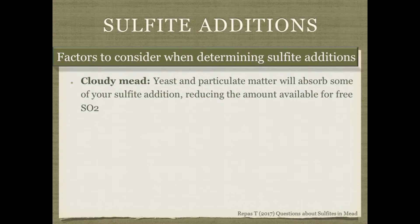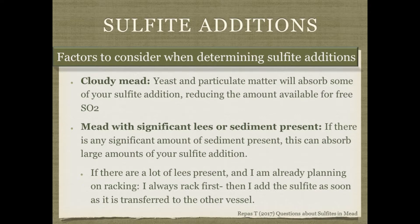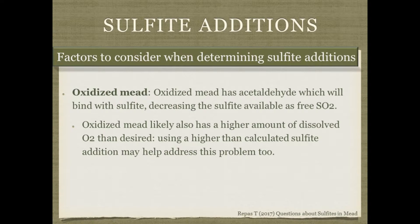If mead is cloudy with yeast or fruit particles, these can absorb some or a lot of your sulfite addition. If there are lees or sediment present, they can absorb a huge amount. My practice is to rack first and then add sulfite immediately after transfer to minimize absorption. If the mead is already slightly oxidized or has acetaldehyde, those will also bind to the sulfite and decrease available levels, requiring a higher-than-calculated dose.